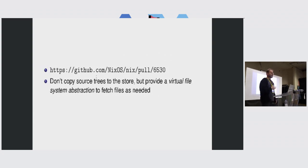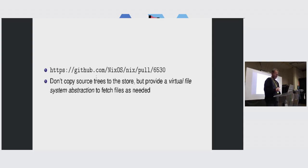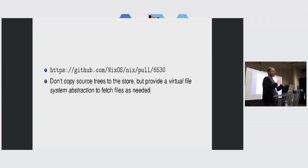The better solution is something called lazy source trees, which I've been working on for a while. It's in a pull request, it's ready for review now, so everybody is welcome to try to find bugs in this. The main idea is to not copy source trees to the store, while still maintaining hermetic evaluation. Inside Nix, there's a sort of virtual file system abstraction for accessing the source code of flakes, and different types of flakes — like a GitHub flake or a local file system flake — have different accessors that lazily read files like Nix expressions.